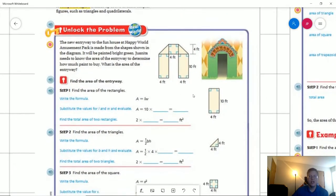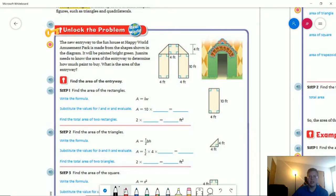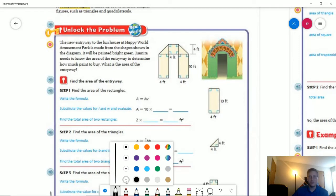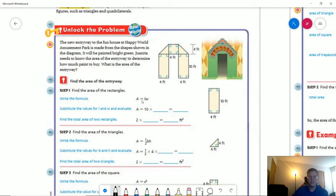So the first thing they want us to do is to evaluate the area for each of the rectangles. So to do that we would just use our standard formula that we learned back in third grade for finding the length times the width is the area. So we have four feet times 10 feet and that's going to give us 40 square feet. We are going to take that because we have two of those rectangles and we're going to do 2 times 40 to get 80 square feet.